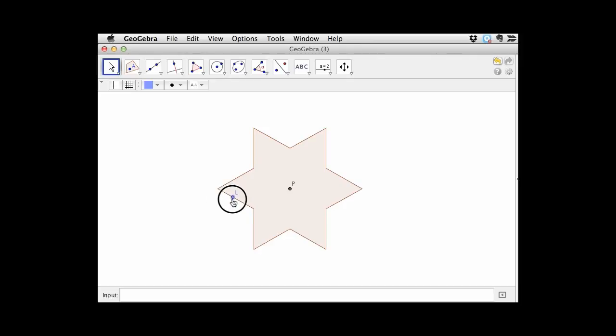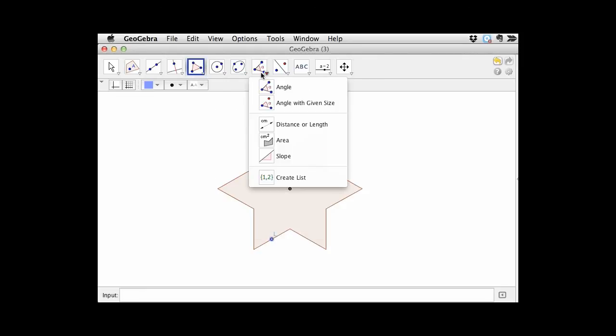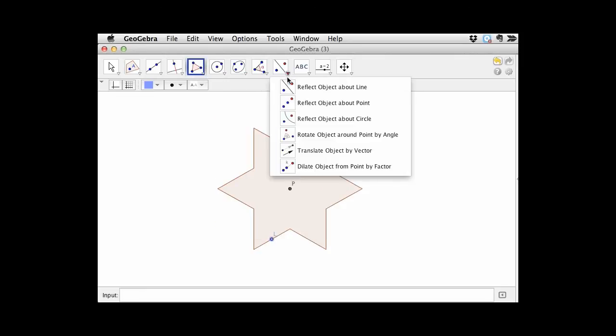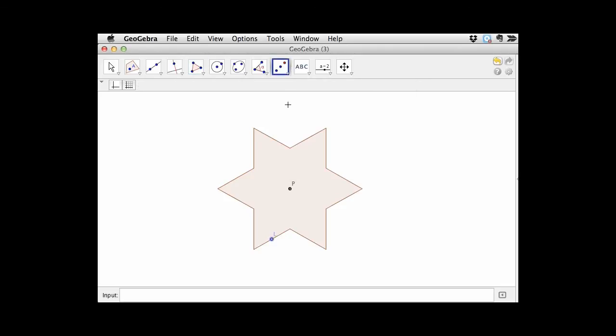Reflect point H about point P. We see that the image is not coinciding with the preimage. In fact, if we turn the trace feature on, you'll see that the image is just sort of the flip, the rotation of 180 degrees, the rotated image of the preimage. So Pentagon does not have point symmetry.